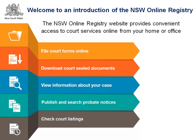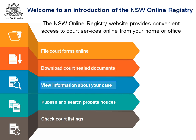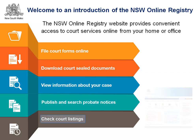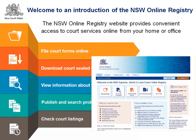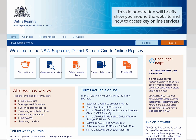Welcome to an introduction of the NSW Online Registry. The Online Registry website provides convenient access to court services online from your home or office. Through this website, you can file a variety of civil court forms online, download court sealed documents, view information about your case, publish and search probate notices, check court listings and more. This demonstration will briefly show you around the website and how to access key online services.